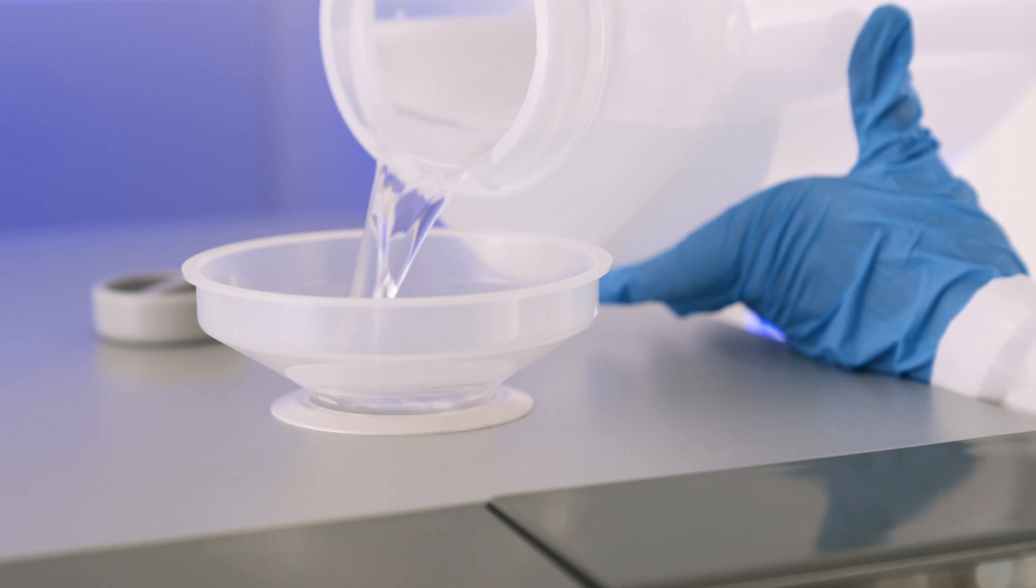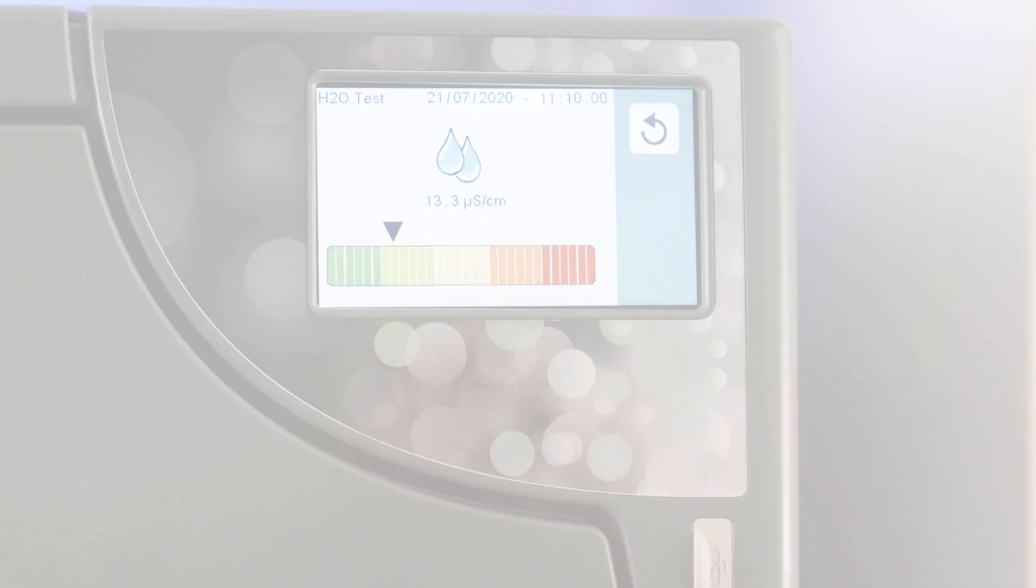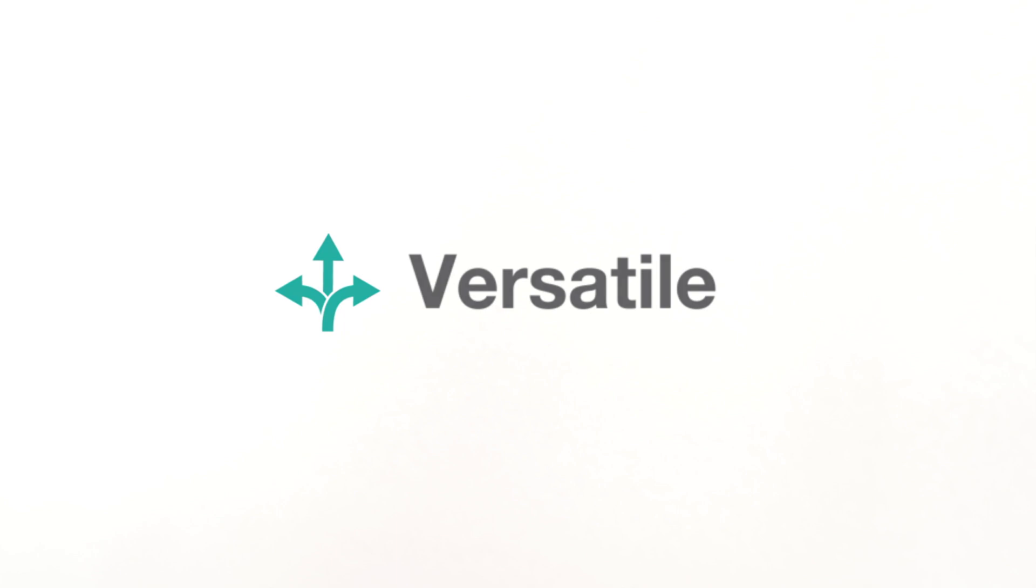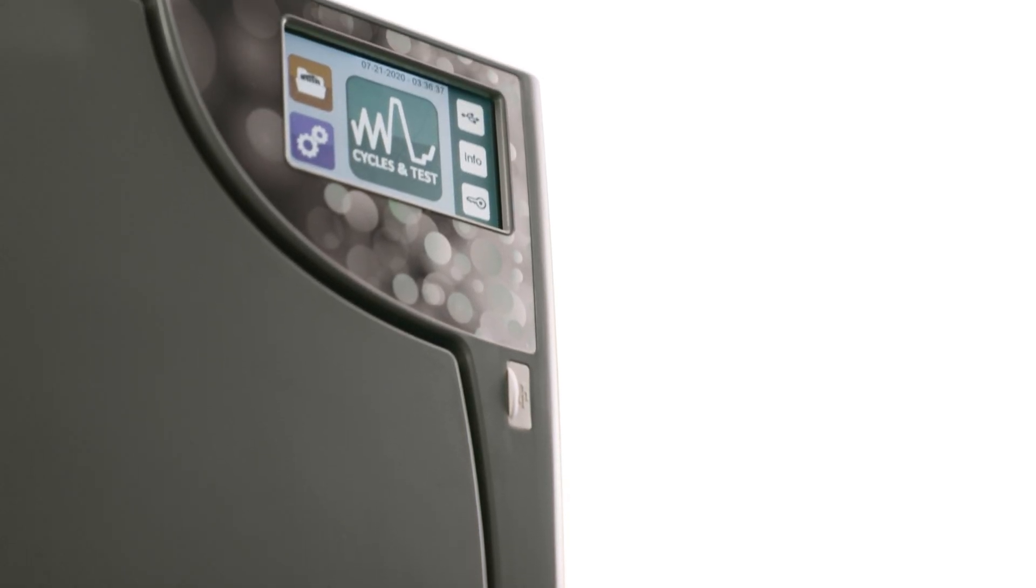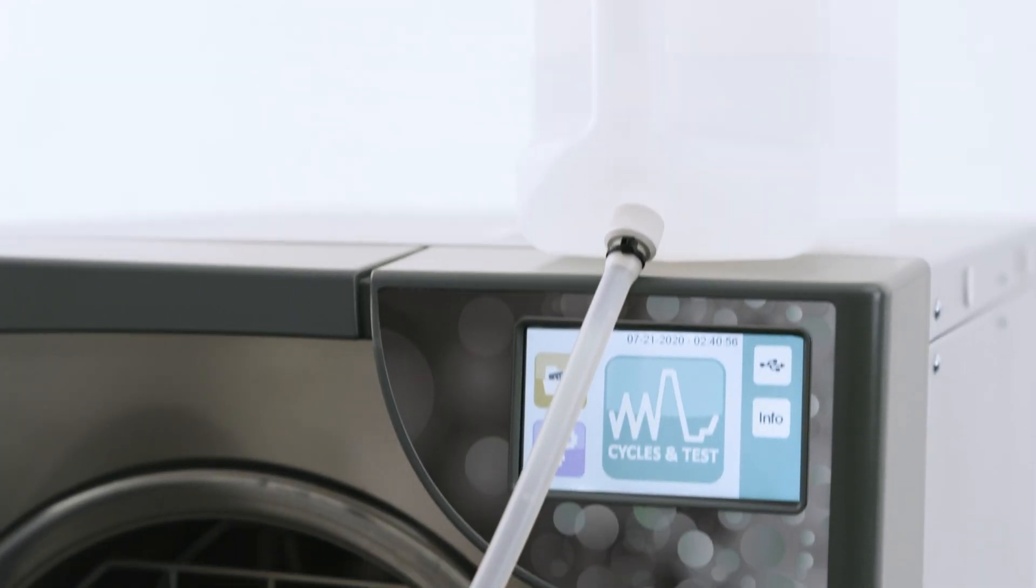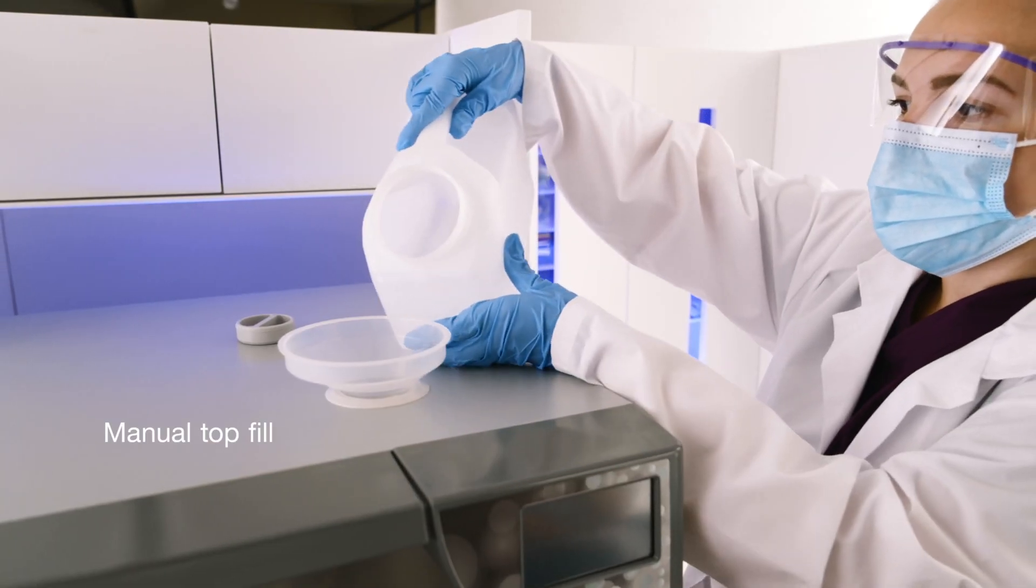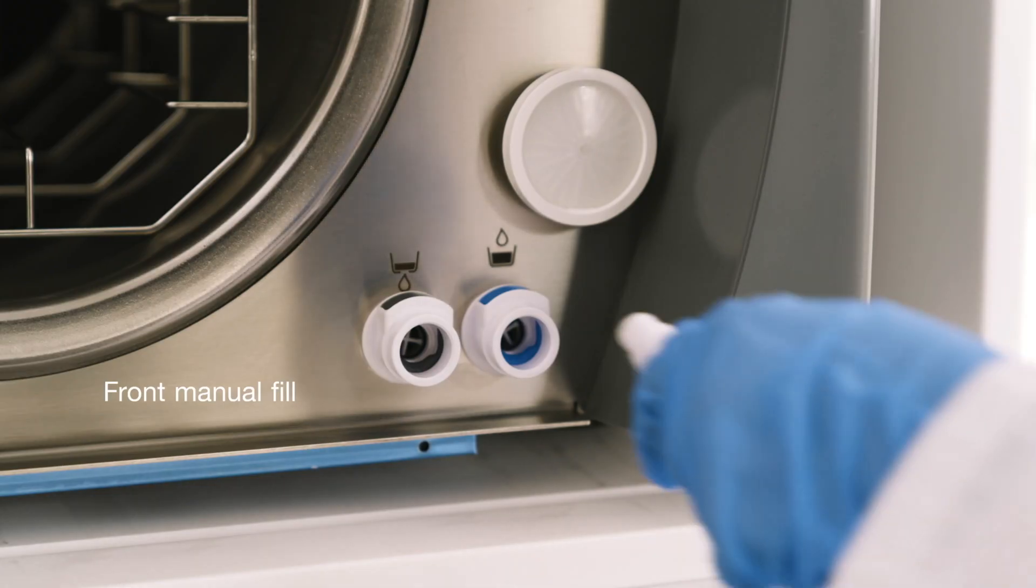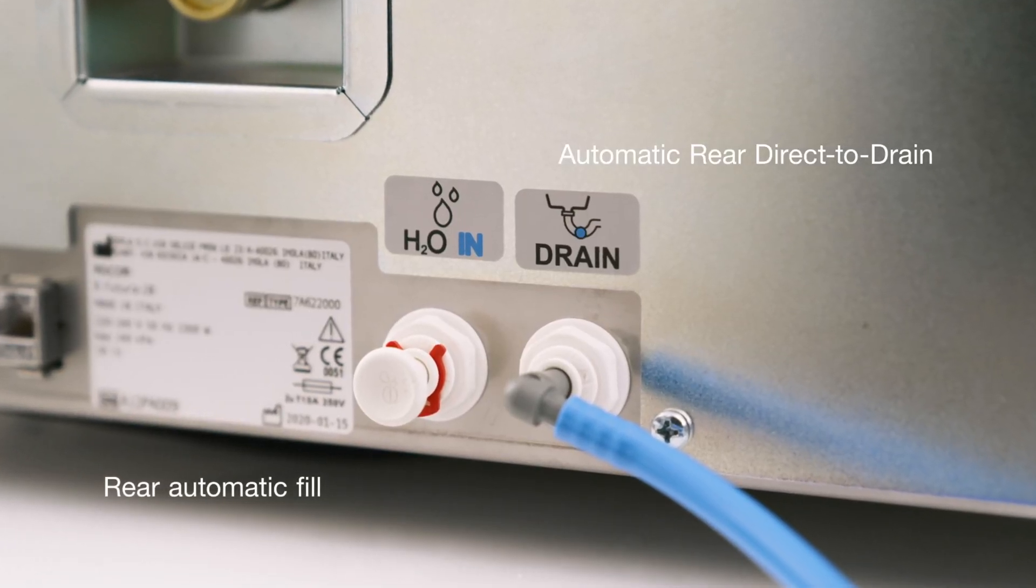Fresh water is used in every cycle, which reduces the buildup of oils and debris. Bravo G4 offers numerous filling and draining options, including manual top and front filling and rear ports for drainage and automatic filling.